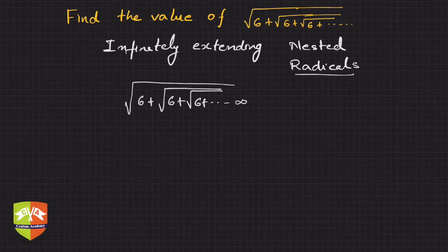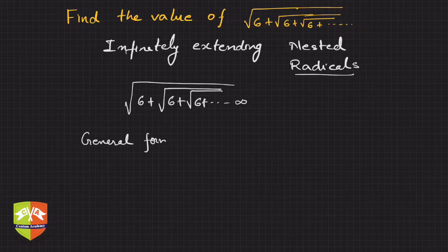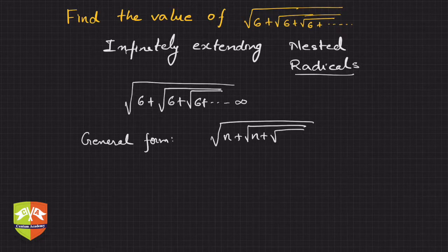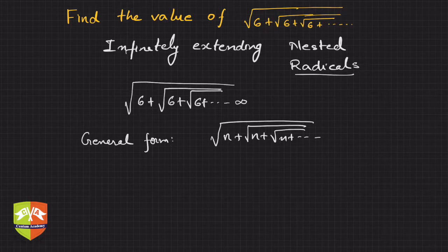General form of the same will be n plus under root n plus under root n plus so on and so forth. So basically we are going to try and find the value of this, and interestingly the value comes out to be, in many cases actually, a rational number.